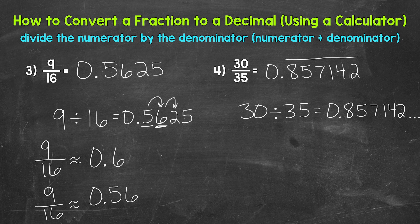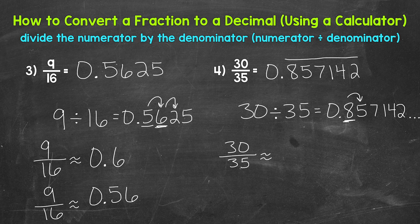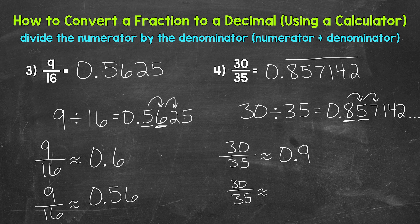Our other option is to round. Rounding to the tenths place: thirty thirty-fifths is approximately 0.9, since we have an eight in the tenths with a five to the right in the hundredths, so this rounds up. Rounding to the hundredths: we have a five in the hundredths with a seven in the thousandths, so this rounds up as well — thirty thirty-fifths is approximately 0.86, or eighty-six hundredths.